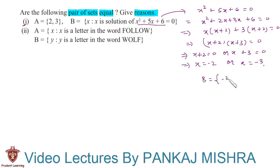So set B will contain the elements -2 and -3. Here you can clearly see that -2 and -3 belong to set B but they do not belong to set A. Also, 2 and 3 belong to set A and they do not belong to set B. Hence we can say that A is not equal to B.